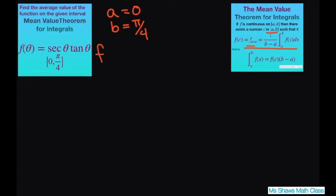Let me write it out for you a little bigger. So your average of your f function is 1 divided by b minus a times the integral from a to b of f of x or f of theta d theta. So we have theta.